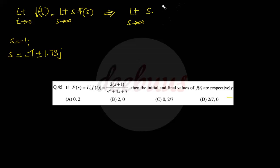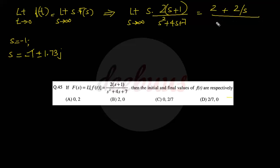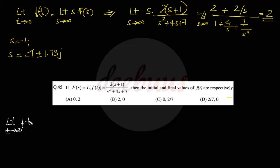Applying initial value theorem: limit as s→∞ of s·F(s) = limit of s × 2(s+1)/(s² + 4s + 7). Dividing numerator and denominator by s²: numerator becomes 2 + 2/s, denominator becomes 1 + 4/s + 7/s². As s→∞, this gives 2/1 = 2. So the initial value is 2.